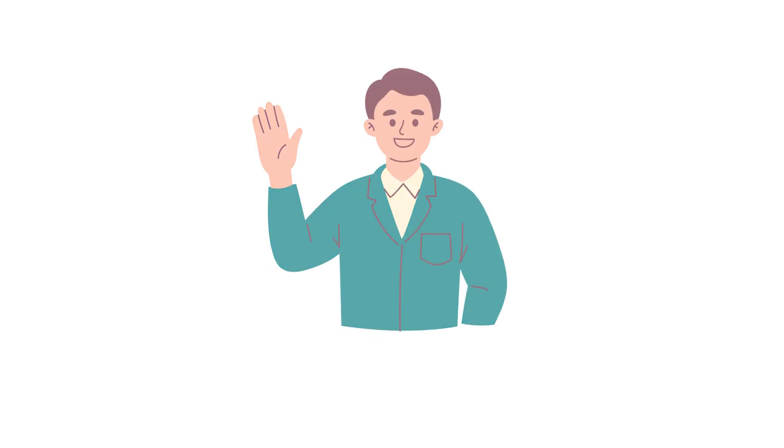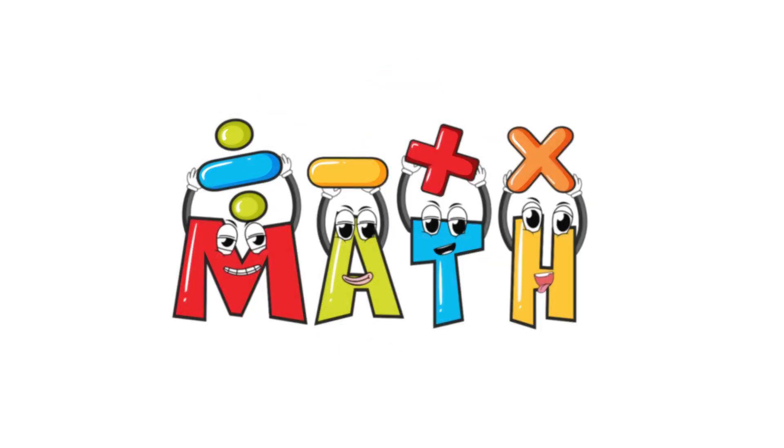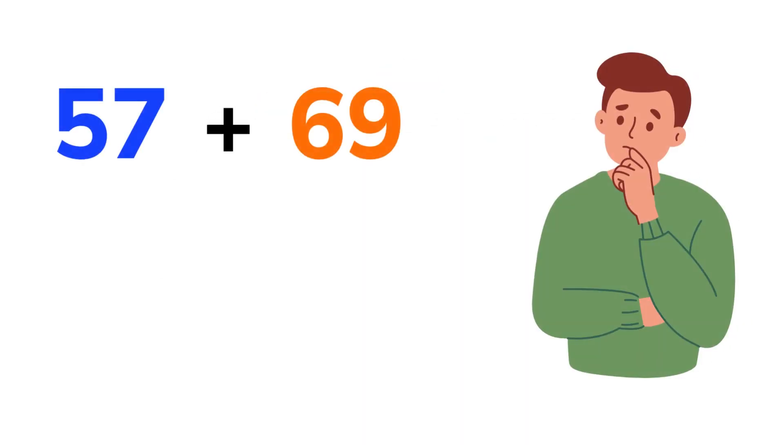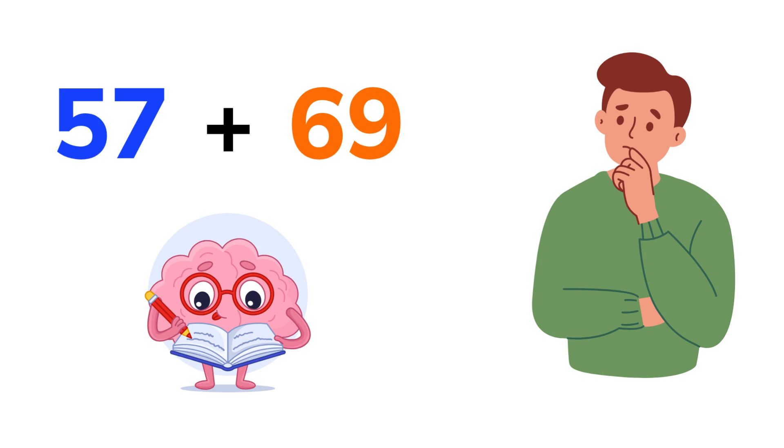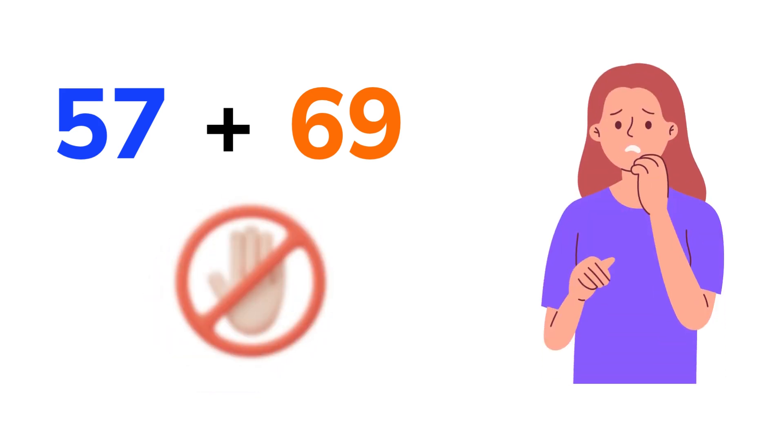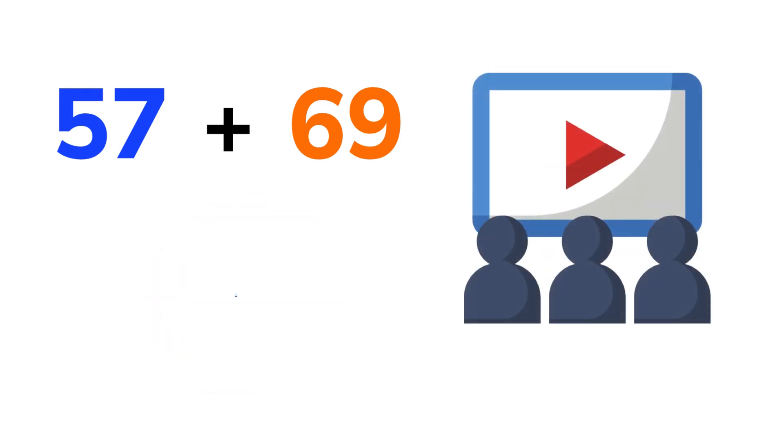Before we start, let's play a quick game. Can you figure out 57 plus 69, quickly? No calculator, no fingers, just your brain. Tough? Don't worry. In this video, I'll show you a super simple trick to add numbers fast, like lightning fast.